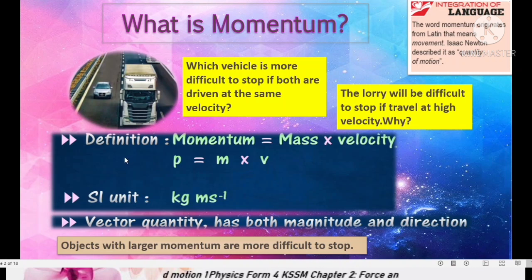Let's define momentum. Momentum is defined as a product of mass and velocity. So momentum equals mass multiplied by velocity. The symbol for momentum is small p equals to mass m multiplied velocity v.